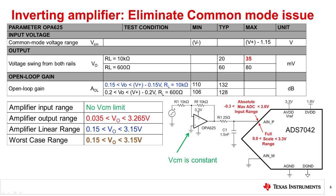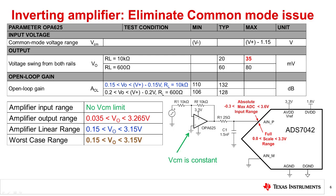One way to avoid the common mode limitation is to use an inverting amplifier configuration. The common mode voltage is set by the voltage applied to the non-inverting input, which in this case is 0 volts because the non-inverting pin is grounded. Note that the common mode voltage is a constant 0 volts, even when the input signal is applied. So the circuit does not have the common mode limitation as the buffer circuit did. Furthermore, this circuit is not susceptible to errors related to common mode rejection limitations, since the common mode is held constant.